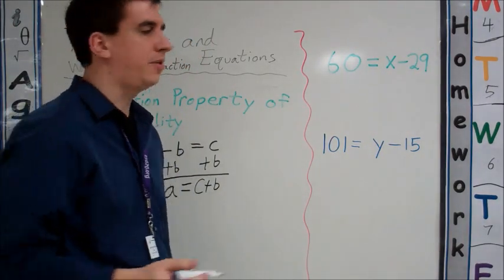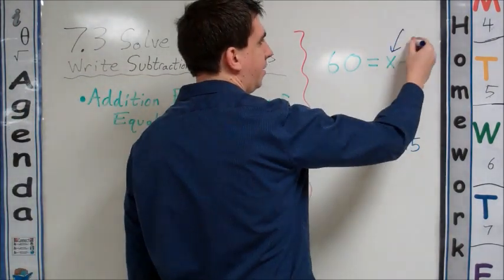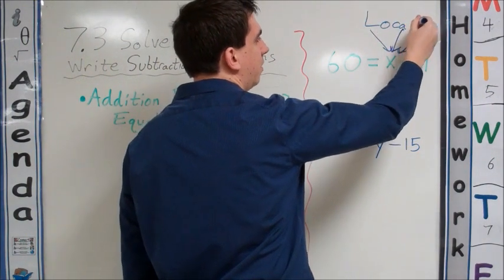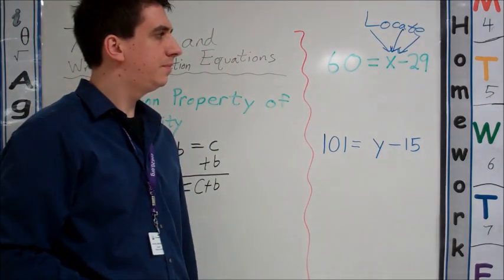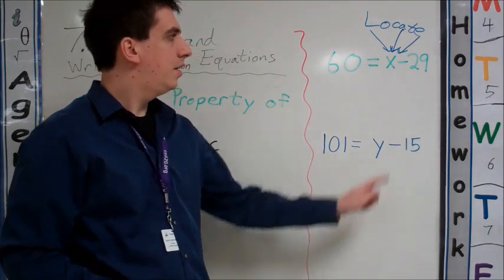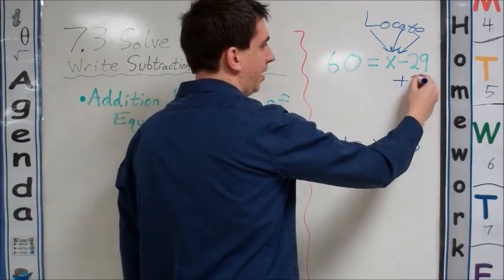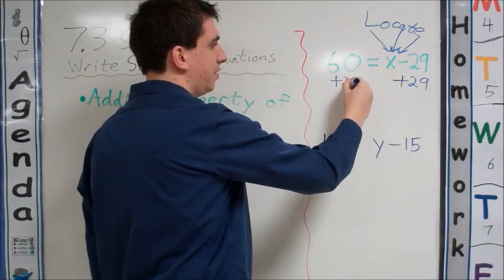Where's our variable? Always, always, always locate your variable. If we have minus 29, we need to add 29 to both sides.